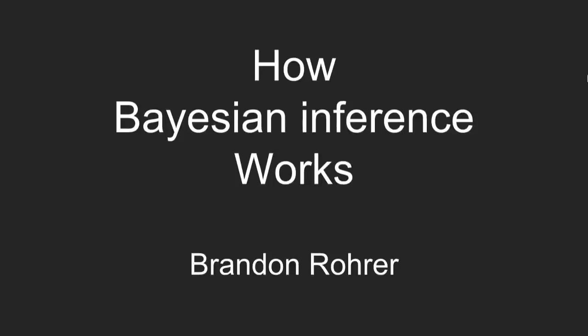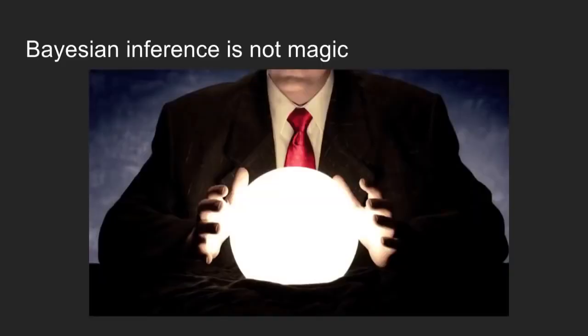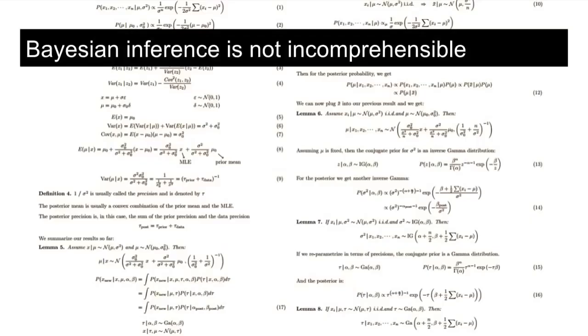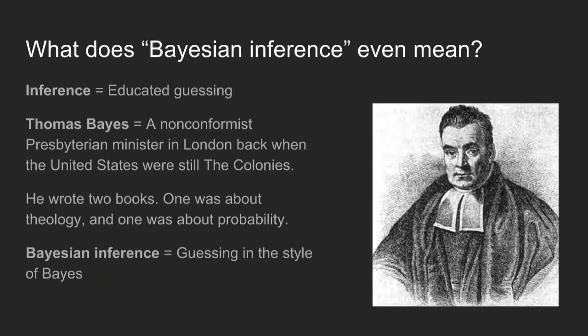Bayesian inference is a way to make guesses about what your data mean based on, sometimes, very little data. The way it works is tricky but not magic — it's definitely something you can wrap your head around. By the time we're done talking, you'll have a pretty crisp picture of how it works. Bayesian inference is just guessing in the style of Thomas Bayes, who was a nonconformist Presbyterian minister who wrote books on religion and probability.